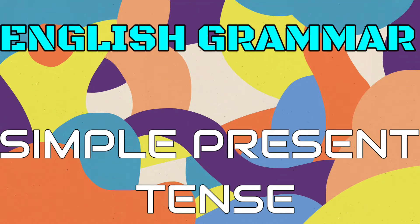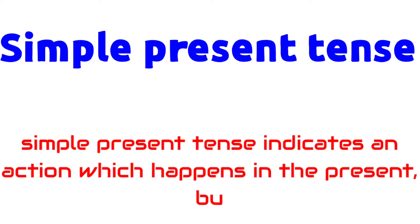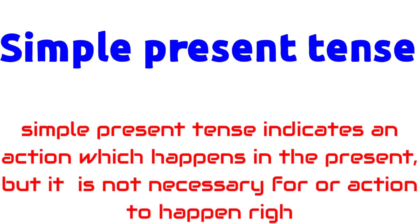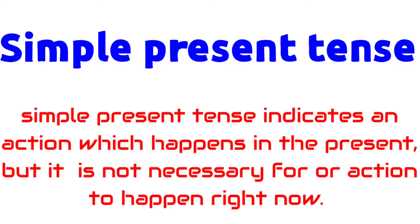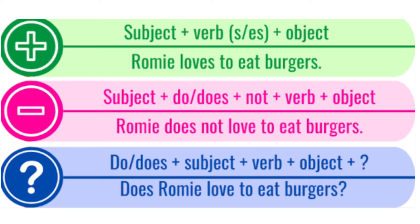Hello friends! Do you know what is simple present tense in English grammar? Simple present tense indicates an action which happens in the present, but it is not necessary for an action to happen right now. Simple present tense indicates changing situations, general truth, scientific facts, habits, fixed arrangements, and frequently occurring events.